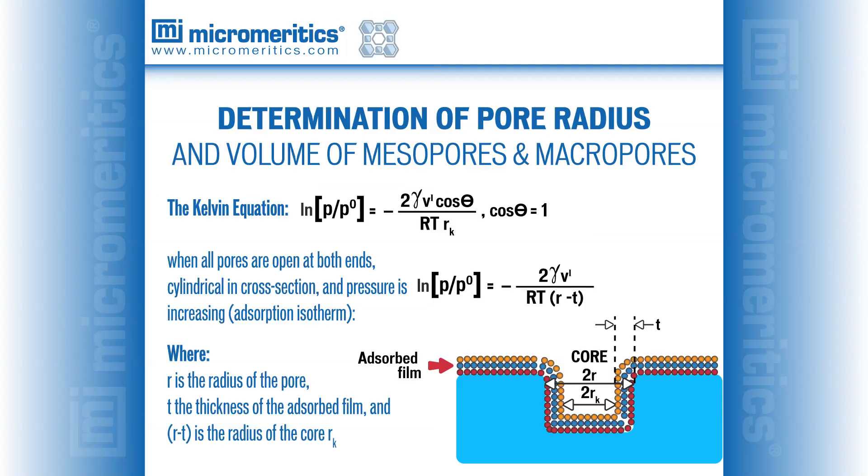The thickness of this layer of film is a function of pressure. Thickness at any pressure can be determined using one of several thickness equations derived for specific adsorbent and adsorbate combinations, such as the Halsey and Harkins-Jura equations. Therefore, the pore being filled is the remaining open core of the actual pore in the sample material. The radius of the pore, R, is the sum of the radius calculated by the Kelvin equation, R sub K, and the thickness, T, of the adsorbed layer on the internal wall of the pore. In other words, R equals R sub K plus T.